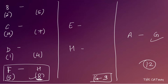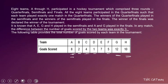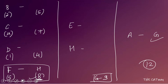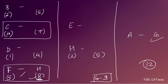Therefore, H must be the team that scored 8 goals in the quarter-final against F. H scored a total of 10 goals in the tournament, and the semi-final was H's second and last match. So H scored 10 minus 8 equals 2 goals in the semi-final. That means H's semi-final opponent scored 2 plus 3 equals 5 goals. One match is now fixed.